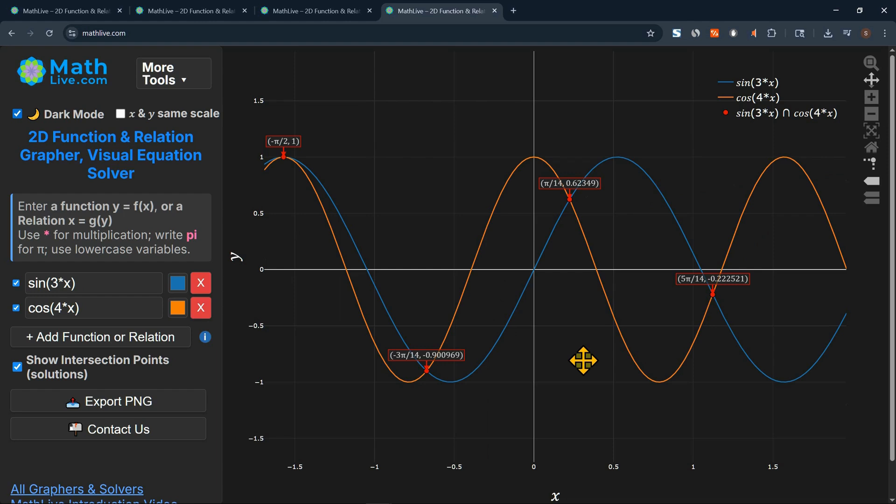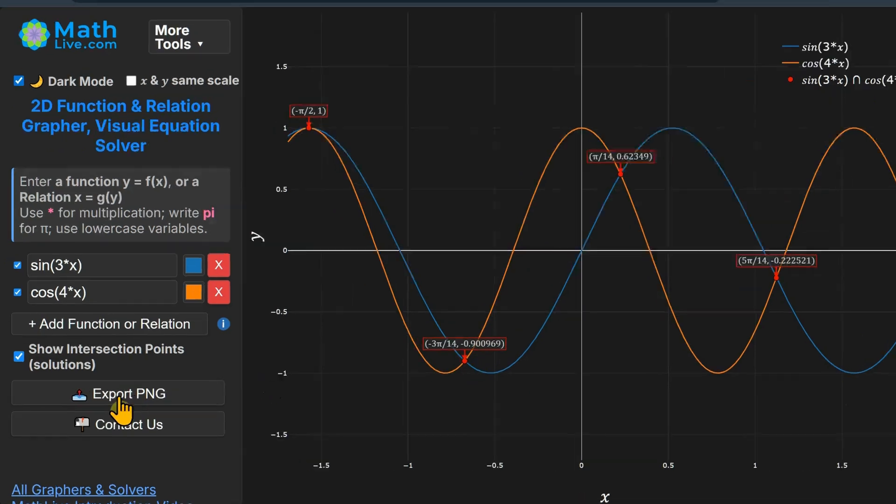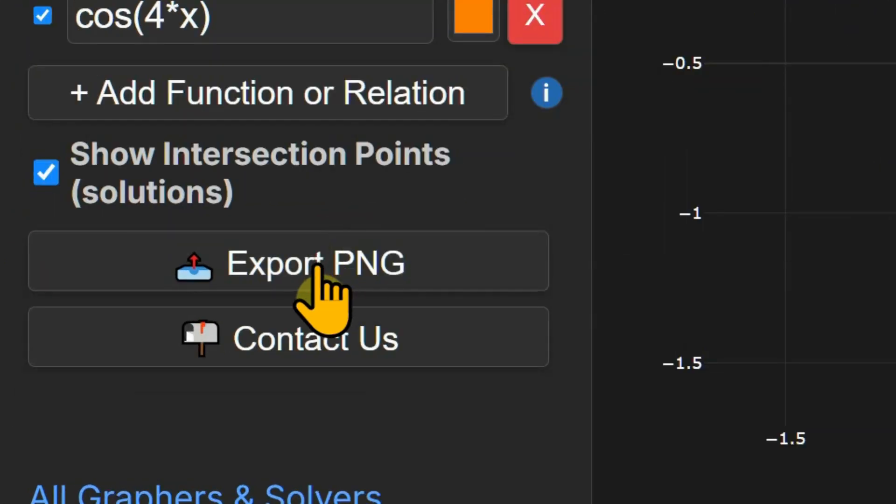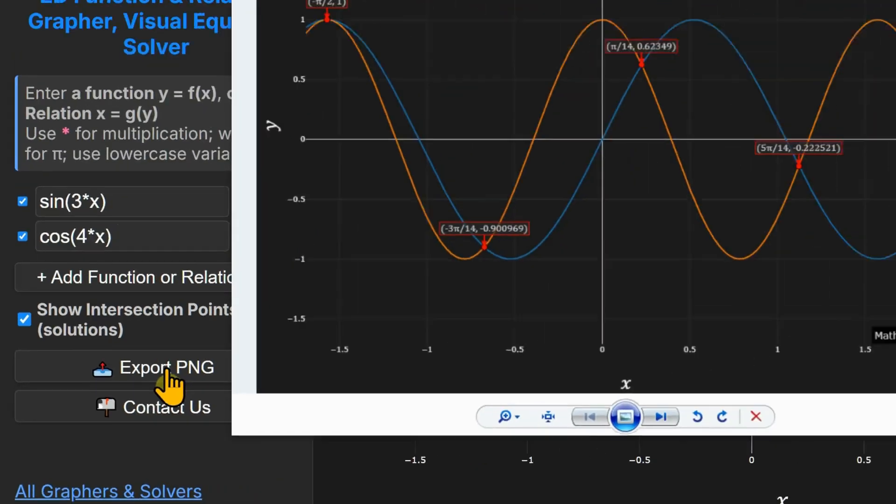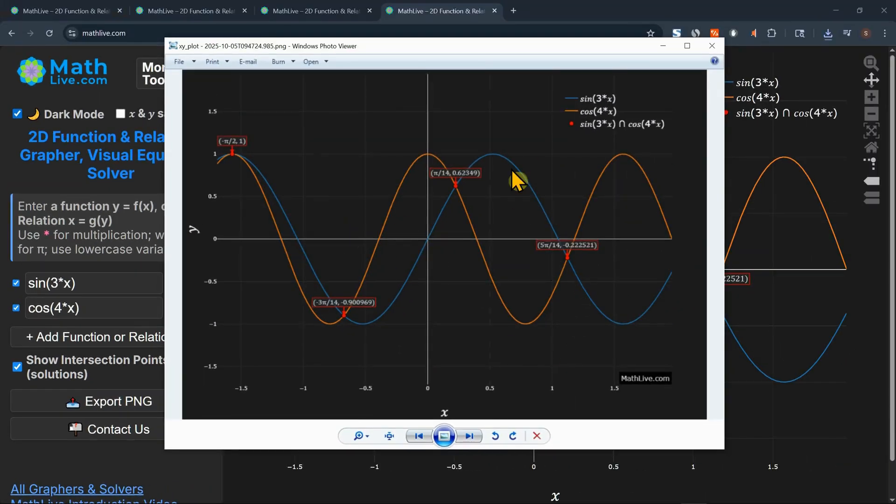You can export your graphs as PNG to include in your documents using this Export PNG button. And as you can see, you export the image on the screen. So you could include it in your research paper or homework or any other document.